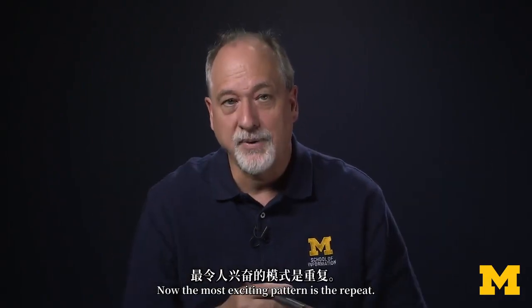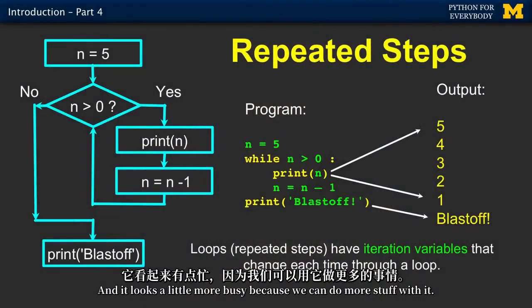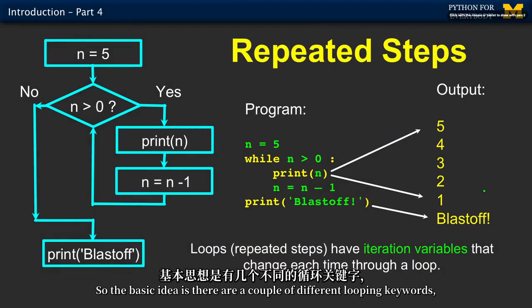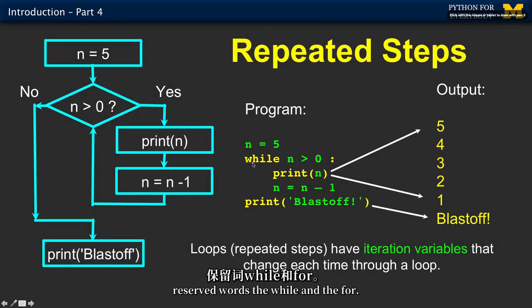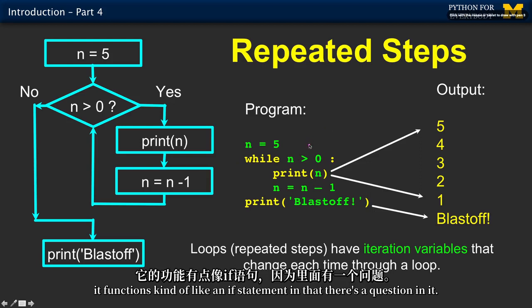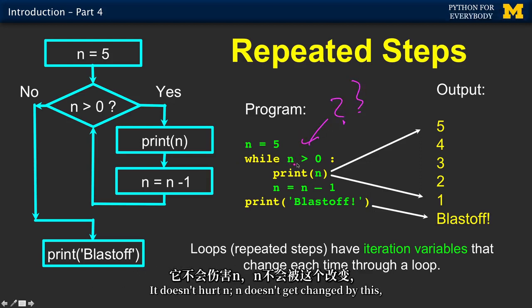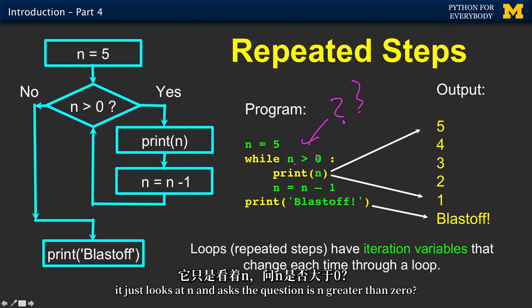Now, the most exciting pattern is the repeat. The basic idea is there are a couple of different looping keywords, reserved words, the while and the for. The while loop basically says it functions kind of like an if statement, in that there's a question in it. It doesn't hurt n, and doesn't get changed by this. It just looks at n and asks the question, is n greater than zero?